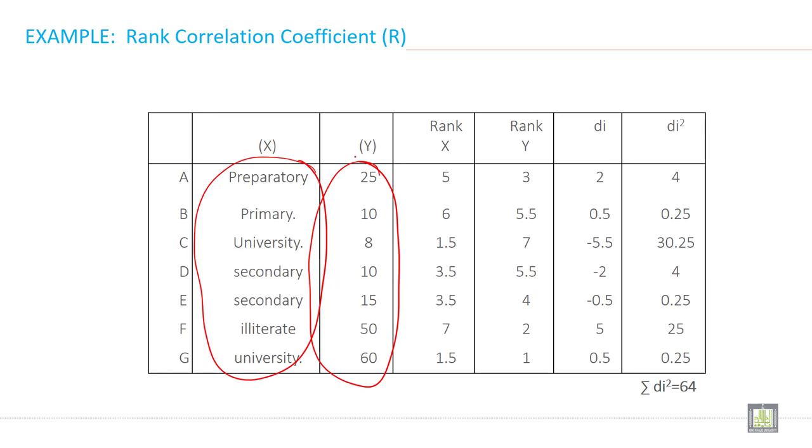Let's start about ranking. See here, university is the highest degree, so you have two universities. Either provide first rank to this or second rank to this, or just vice versa, but providing two types of rank to the same variable is not justifiable. So just make average of these two ranks, so average of these two ranks is 1.5 and 1.5.